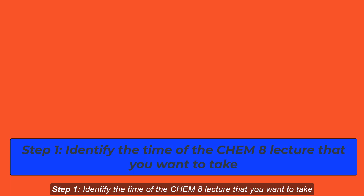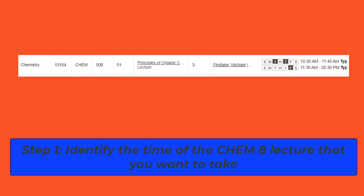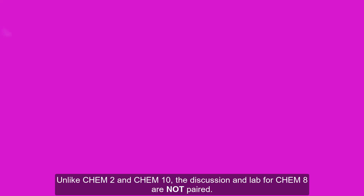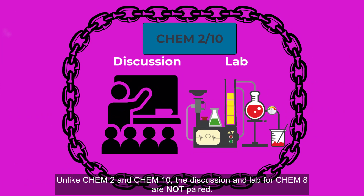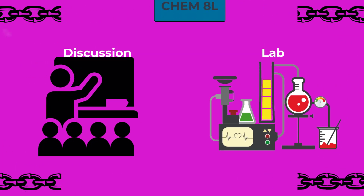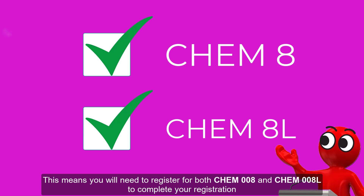Step 1: Identify the time of the Chem 8 lecture that you want to take. Step 2: Select one of the linked discussion courses listed directly below the lecture. Unlike Chem 2 and Chem 10, the discussion and lab for Chem 8 are not paired. The lab for Chem 8 shows on the class schedule as Chem 8L, meaning you will need to register for both Chem 8 and Chem 8L to complete your registration.